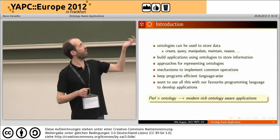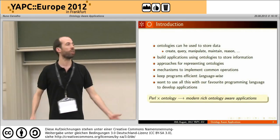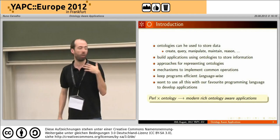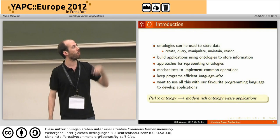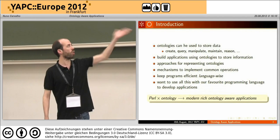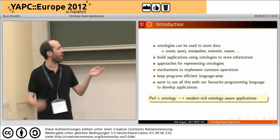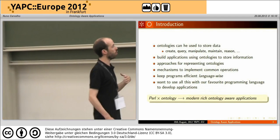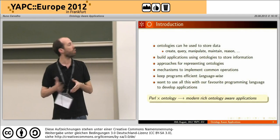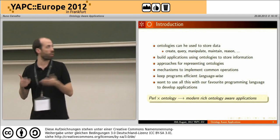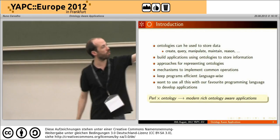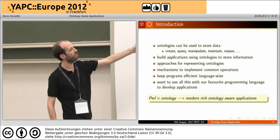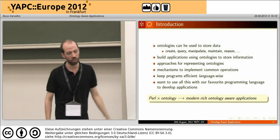To do this, we need at least a way to represent ontologies in Perl, a way to implement simple operations that our application requires, and of course we want to use all this inside our favorite programming language, Perl. The bottom line is we want to use Perl as the programming language to create ontologies to store data and build applications — modern, rich, ontology-aware applications.